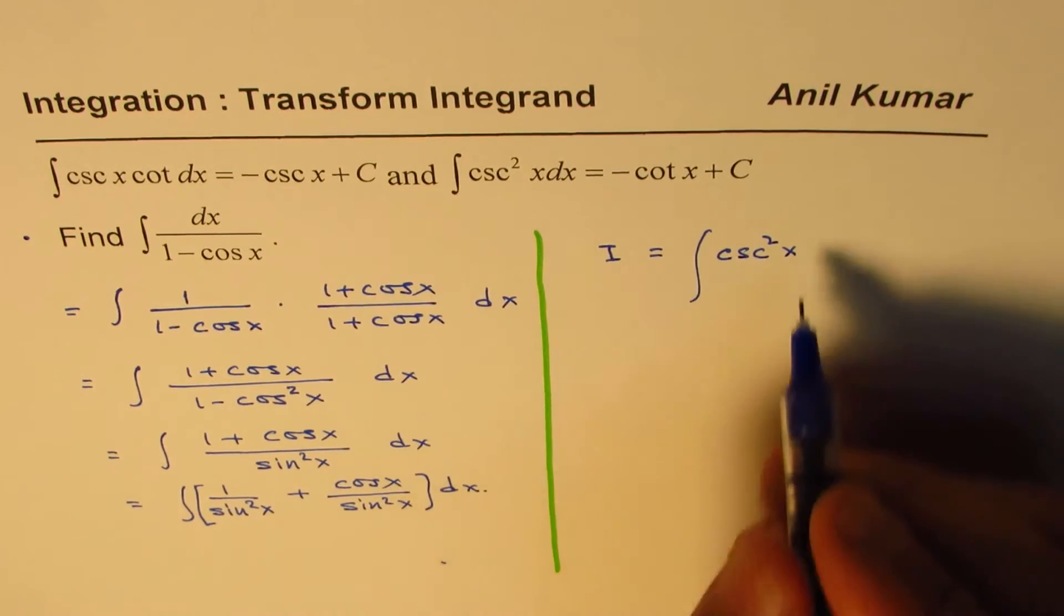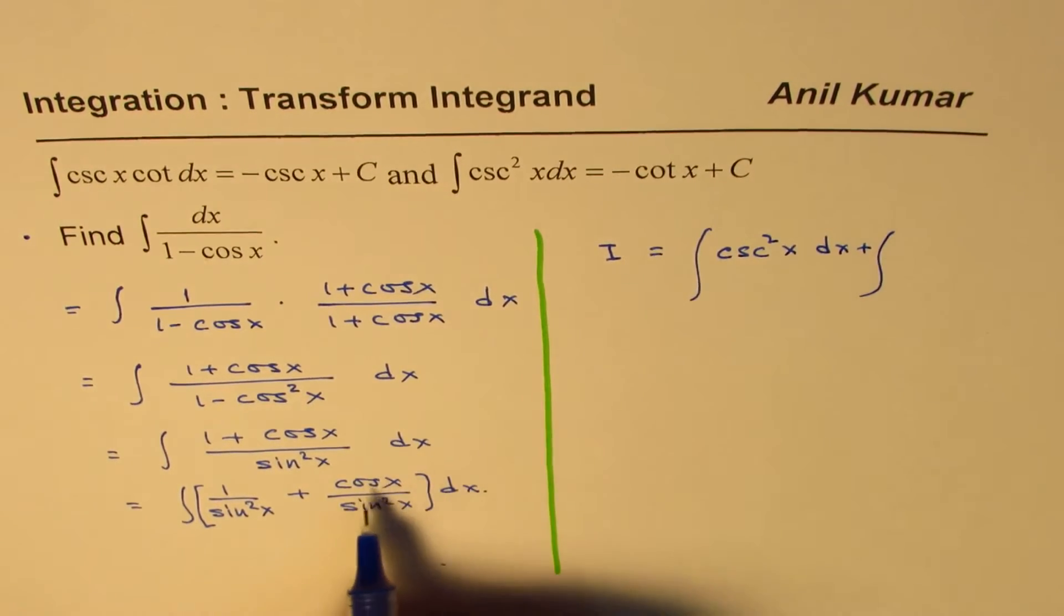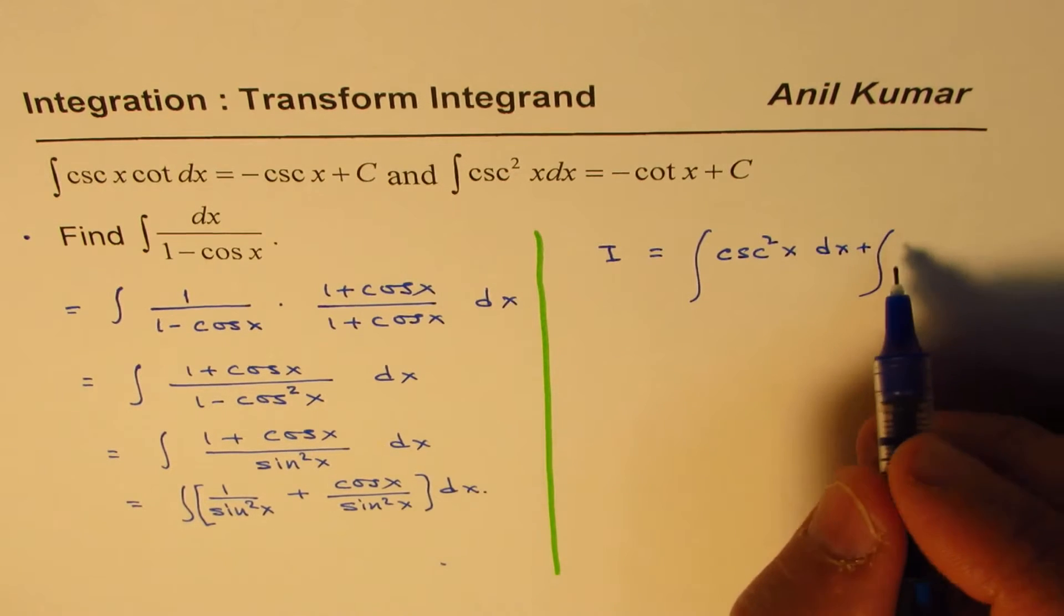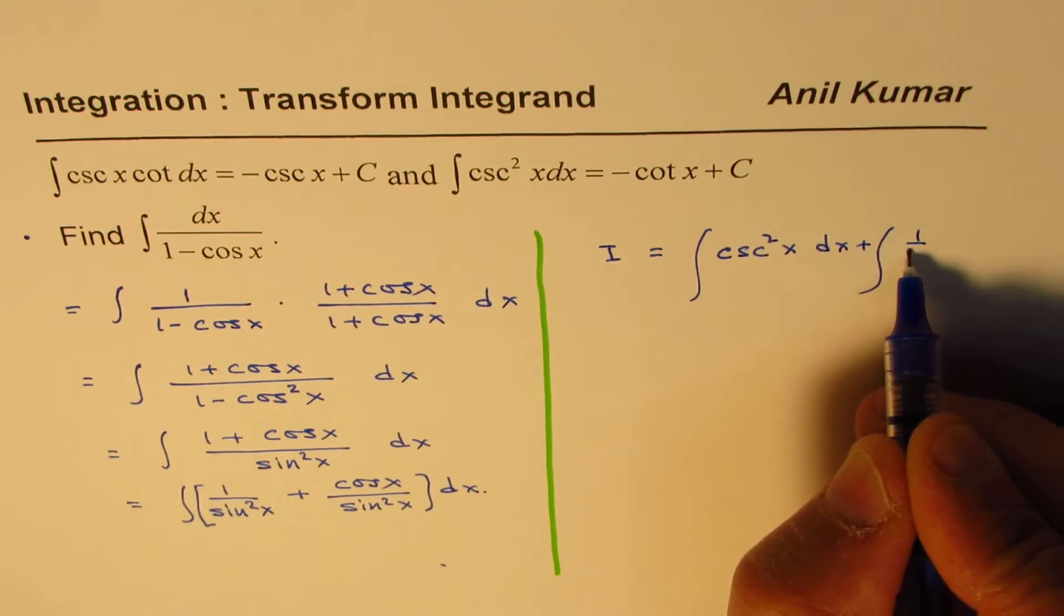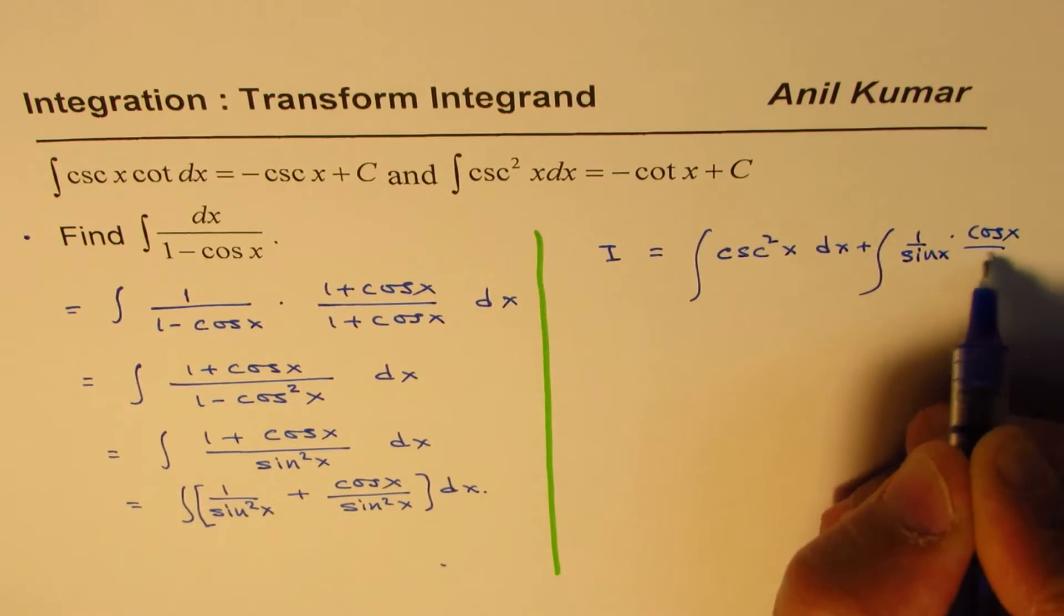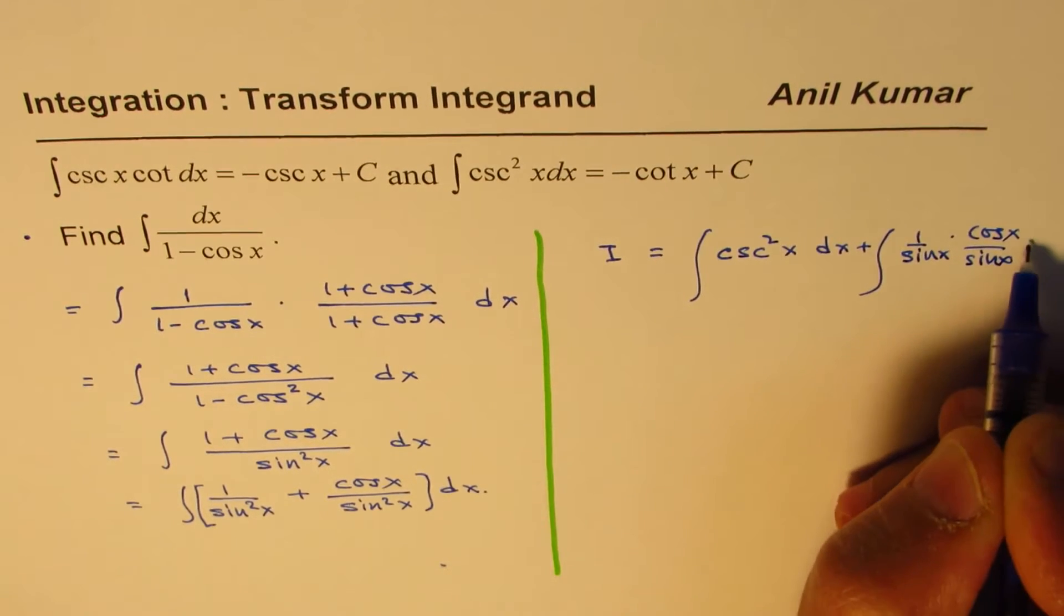dx plus integral of cos x over sine x is cot x, and then 1 over sine x is cosecant x. So we could write this as, or let me write first as, 1 over sine x times cos x over sine x, dx.